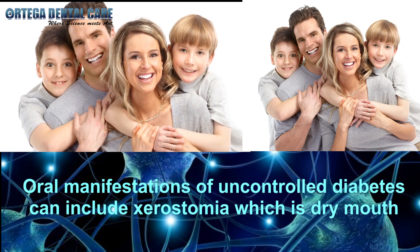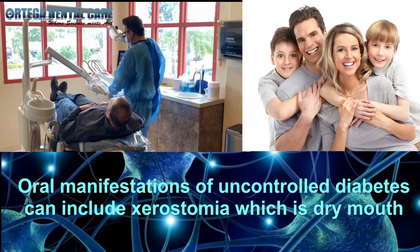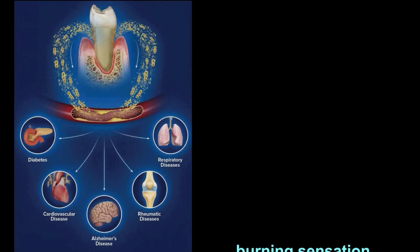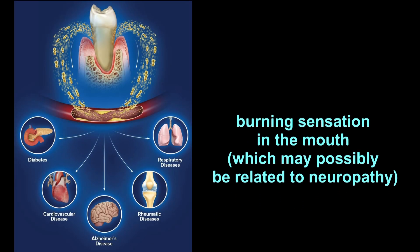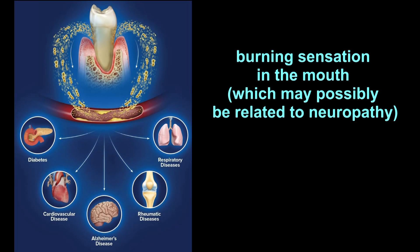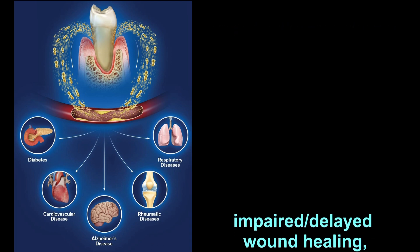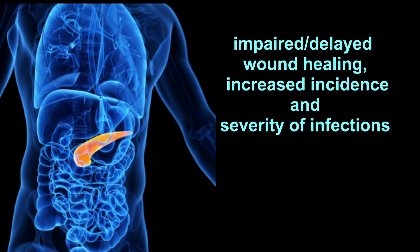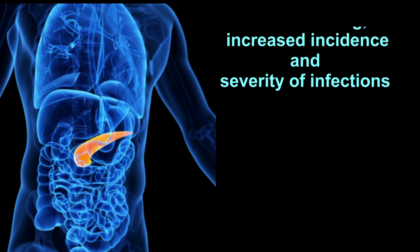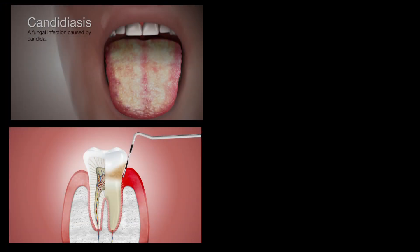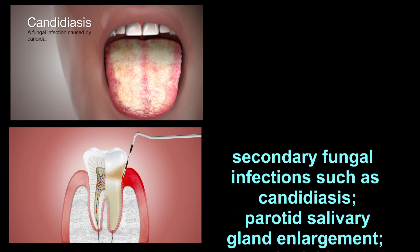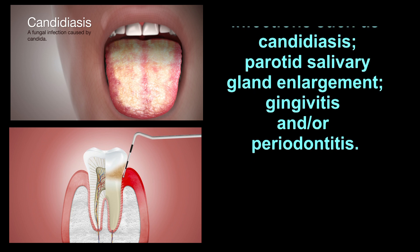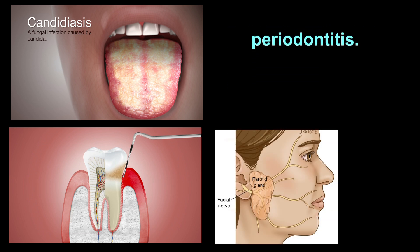Oral manifestations of uncontrolled diabetes can include xerostomia, which is dry mouth, burning sensation in the mouth which may possibly be related to neuropathy, impaired or delayed wound healing, increased incidence and severity of infections, secondary fungal infections such as candidiasis, parotid salivary gland enlargement, and gingivitis and/or periodontitis.